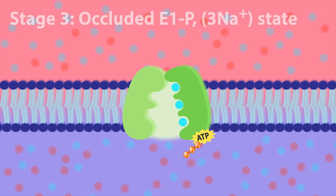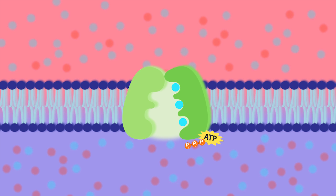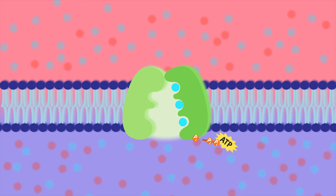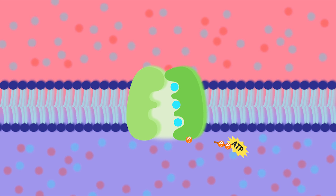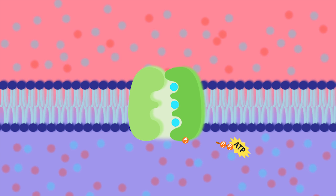Stage three is referred to as the occluded E1P-3 sodium state. In this stage, the bound ATP molecule phosphorylates an aspartate residue on the alpha subunit, which promotes a conformational change that causes the sodium-potassium ATPase to close or occlude the bound sodium ions from both the intracellular and extracellular sides. The loss of the phosphate from the ATP causes it to convert to ADP, after which it disassociates from the sodium-potassium ATPase.